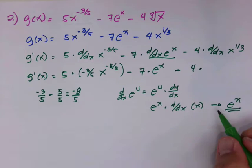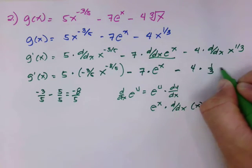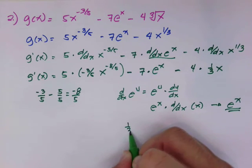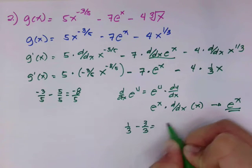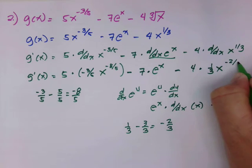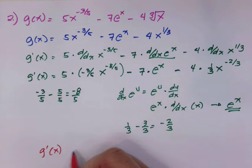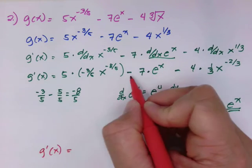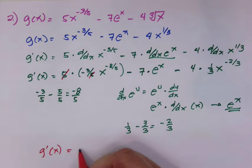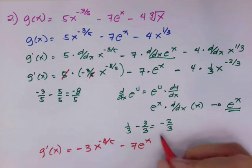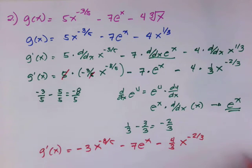Minus 4 times the derivative of x to the 1 third, which is 1 over 3 times x to the 1/3 minus 1. Subtracting 1 from 1/3 gives negative 2 over 3. Simplifying, we cancel 5 and 5 to get negative 3x to the negative 8 over 5, minus 7e to the x, minus 4 over 3 x to the negative 2 over 3.